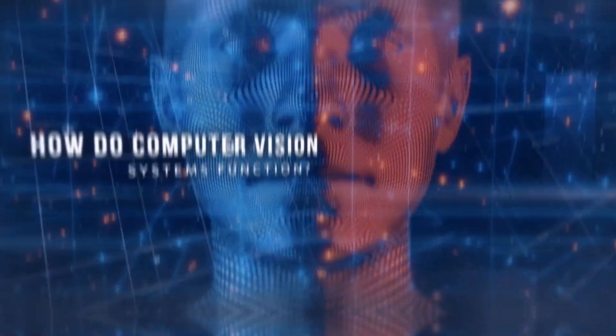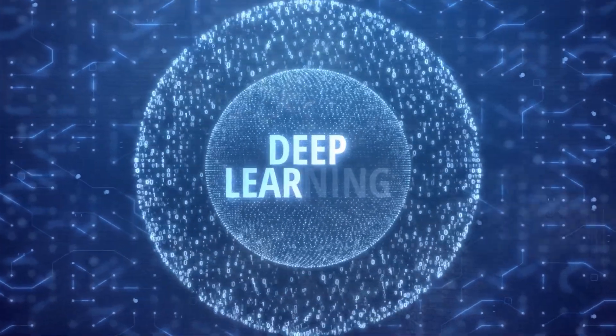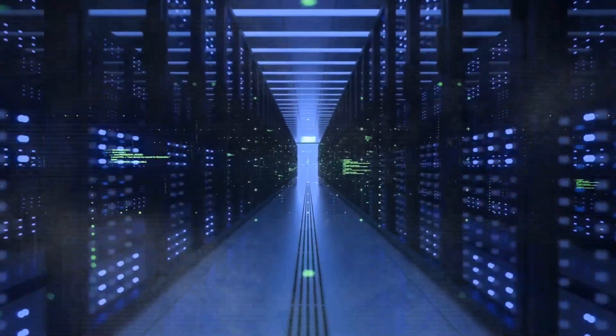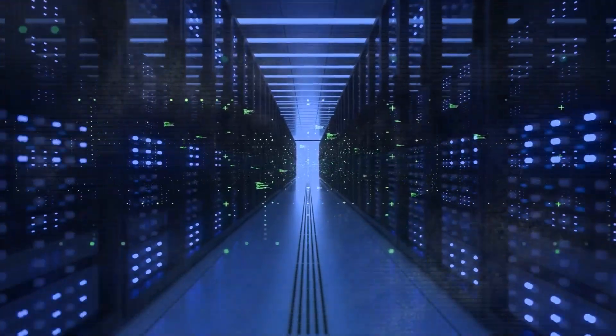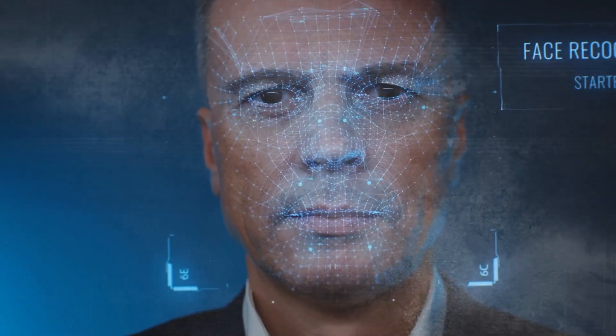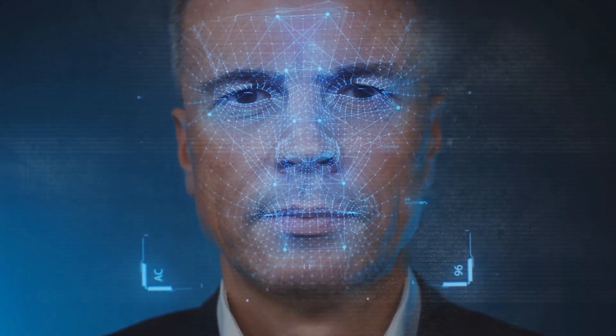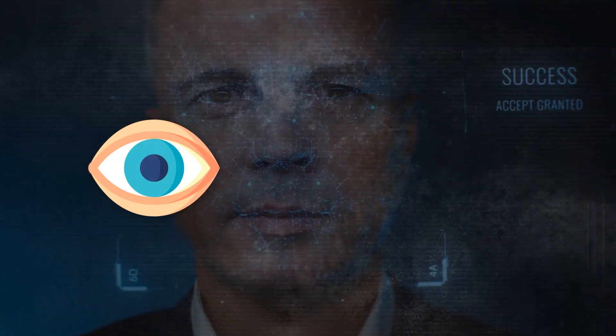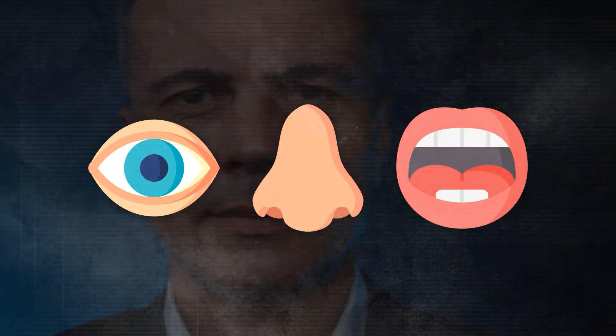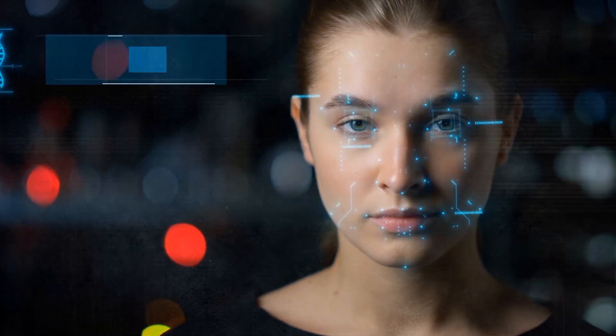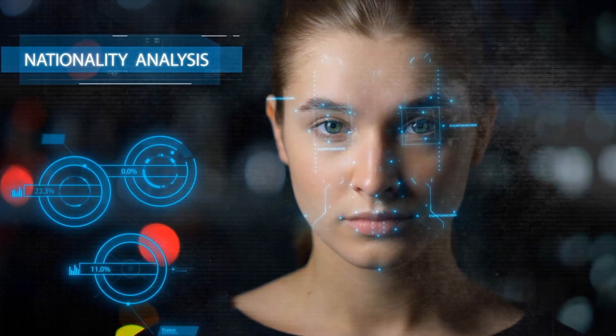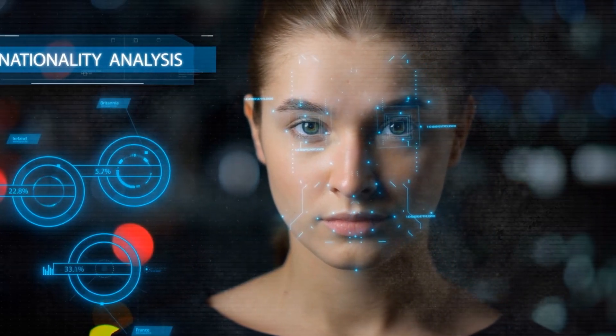But how do computer vision systems function? Well, they use deep learning techniques to learn from large amounts of data and extract features that are relevant for the task at hand. For example, if you want to recognize a person's face in a photo, you need a model that can learn to identify the key characteristics of a face, such as the shape of the eyes, nose, mouth, etc. Then, you need a model that can compare the features of the face in the photo with the features of the faces in your database and find the best match.